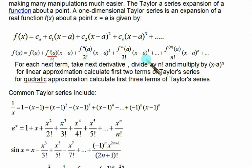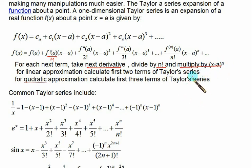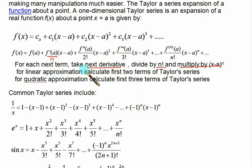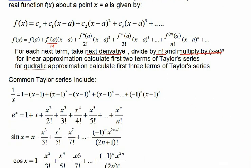The first term is f'(a) into (x minus a), then f''(a) divided by 2 factorial into (x minus a) squared. The rule is simple: take the next derivative, divide by n factorial, and multiply by (x minus a) to the power n, where n is the order of the derivative. For quadratic approximation take the first three terms, and for linear approximation take the first two terms. We will use this to demonstrate the Taylor series for e^x and sin(x).